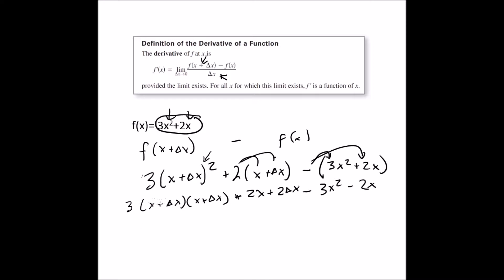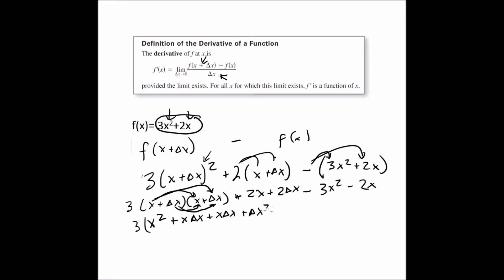We still have to FOIL here. x times x is x squared. x times the change of x is x·Δx. Change of x times x is also x·Δx. And change of x times change of x is Δx squared. Don't forget we still have to multiply all that by 3. Then we have plus 2x, plus 2 change of x, minus 3x squared, minus 2x.